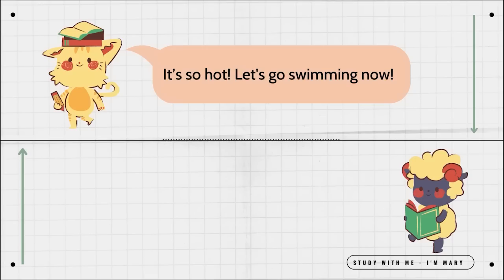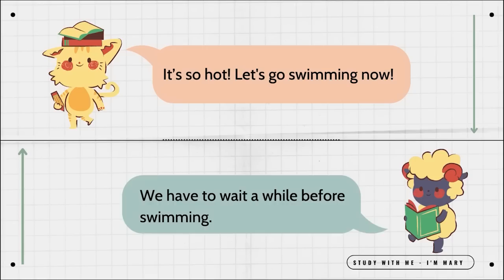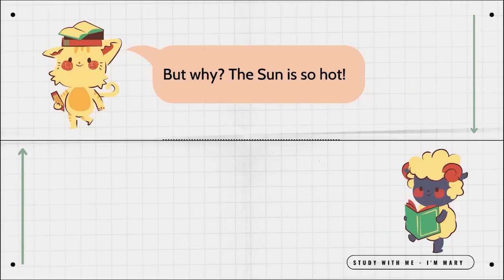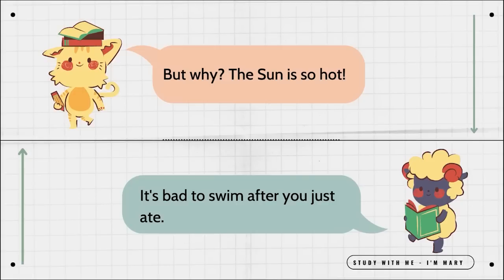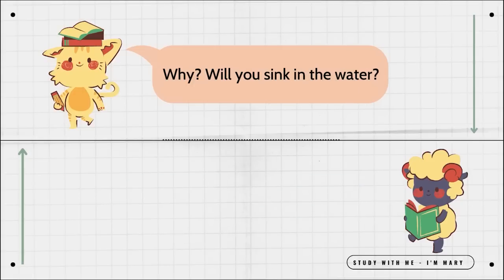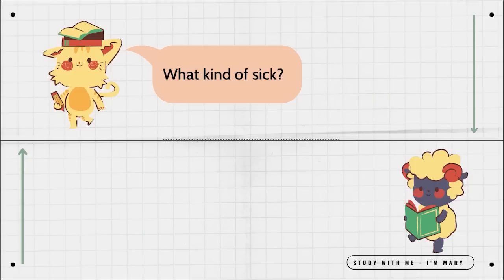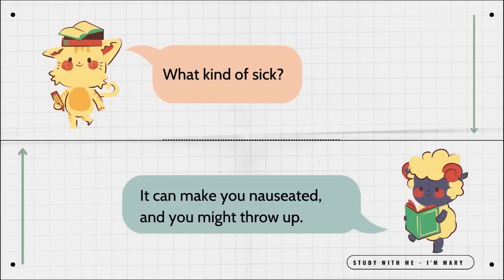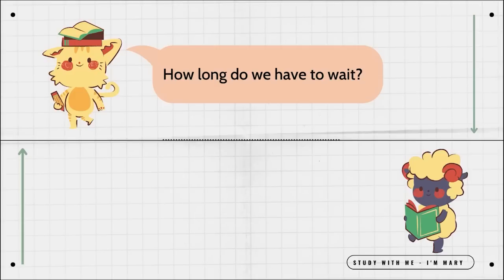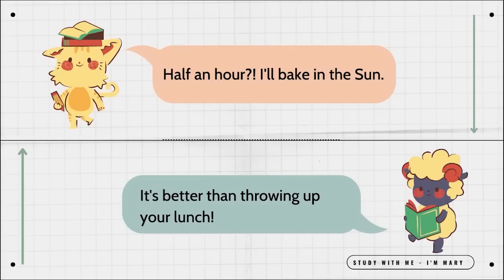So hot. Let's go swimming now. We have to wait a while before swimming. But why? The sun is so hot. It's bad to swim after you just ate. Why? Will you sink in the water? No. The motion and sudden cold will make you sick. What kind of sick? It can make you nauseated and you might throw up. How long do we have to wait? Only about half an hour. Half an hour? I'll bake in the sun. It's better than throwing up your lunch.